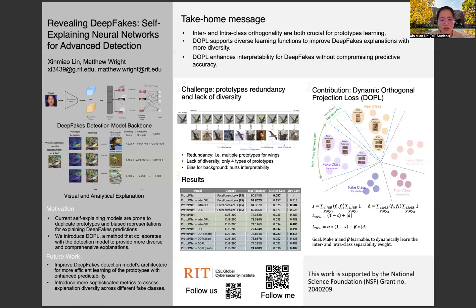Let me conclude by highlighting our key contributions to deepfake detection. Through our research with DOPL, we've demonstrated three crucial findings. First, both inter-class and intra-class orthogonality play vital roles in prototype learning, leading to more comprehensive deepfake detection capabilities. Second, our dynamic weighting system successfully supports diverse learning functions, allowing the model to adapt its prototype learning strategy based on the specific characteristics of deepfakes it encounters. Third, and perhaps most importantly, we've enhanced the interpretability of our detection system without compromising its accuracy — a balance often difficult to achieve in deep learning models. Looking ahead, we are working on improving the model architecture to learn prototypes more efficiently and developing more sophisticated metrics to better assess explanation diversity across different types of deepfakes.